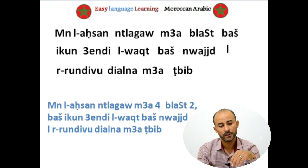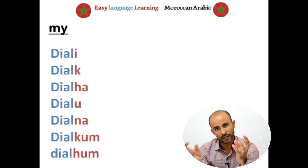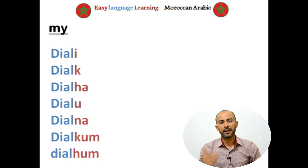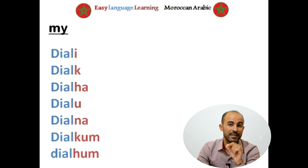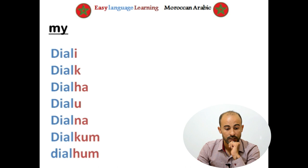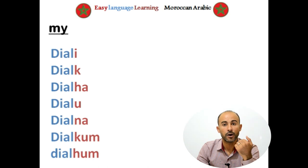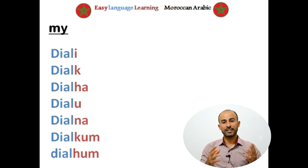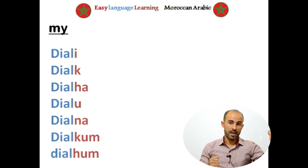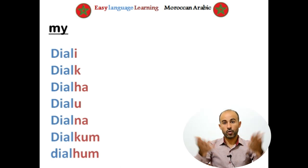Here, to express possession, we use ديال. ديالي means 'mine' — for example لكتاب ديالي means 'my book.' ديالك means 'yours.' ديالها means 'hers.' ديالو means 'his.' ديالنا means 'our.' ديالكم means 'yours' (plural). ديالهم means 'theirs.' So ديال is the possessive word: ديالي، ديالك، ديالو، ديالها، ديالنا، ديالكم، ديالهم.